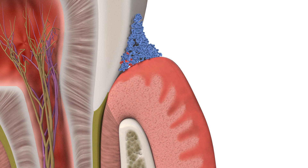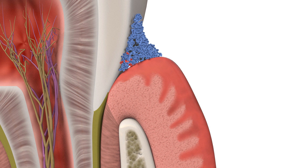In a healthy mouth, dental plaque contains predominantly commensal or beneficial bacteria, depicted here in blue, that are in homeostasis with the host. However, in people susceptible to periodontal disease, through poor oral hygiene or other health conditions,